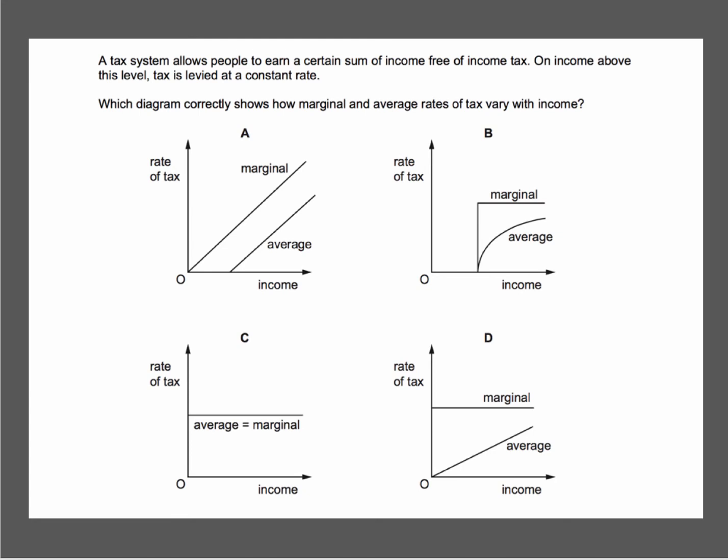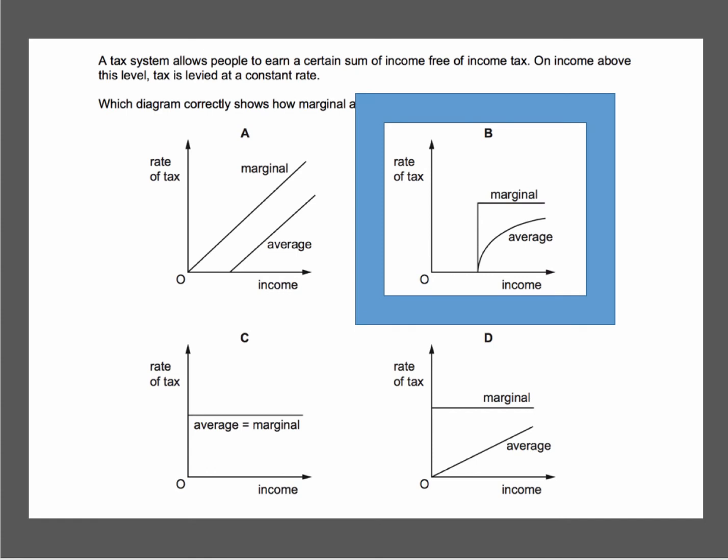What did you get for this question? Crucially, the key bits of information are that you can earn a certain amount of income tax-free, so there would be a zero percent rate on that income. Thereafter, any extra income you earn is taxed at a constant rate. The correct answer is B.